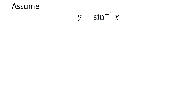To find the value of cosine of arc sine of x, let's assume y is equal to arc sine of x. As arc sine is the inverse of sine, by applying the properties of inverse functions we get sine of y is equal to x.